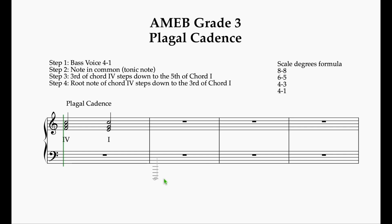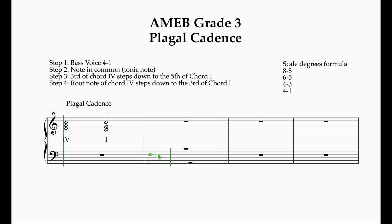Today we're going to learn how to voice this in four-part harmony. First step: the bass voice is going to go from the fourth note of the scale — the root note of chord 4 — which is the F, into the bass voice, and that will step down to the root note of chord 1 which is the C. So the fourth note of the scale moves to the first note of the scale as the root notes of the chords. That's the bass voice. Now the next voice to take advantage of is giving the note in common — I'm going to give it to the soprano — which will help create a smooth flow. That is the tonic note of the scale, so it's the fifth of chord 4 going to the root note of chord 1, which gives us that oblique feel in the voice leading.